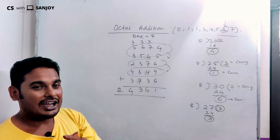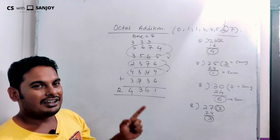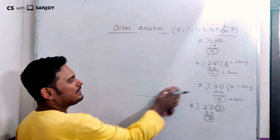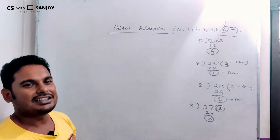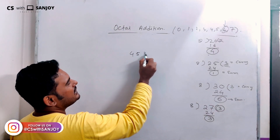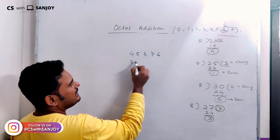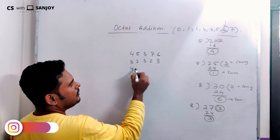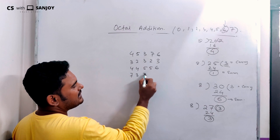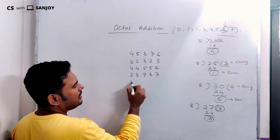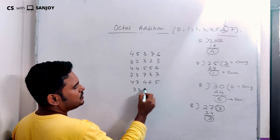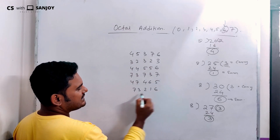Again, I am giving you an exercise. Post your answer in the comment section and we will reply. Here is the problem: add the following octal numbers — 45376, 32, 3, 234, 45, 5, 6, 7, 3, 737, 47, 46, 57, 32, 1, 6. This is the octal number problem I am providing you, and your answer should be in base 8.